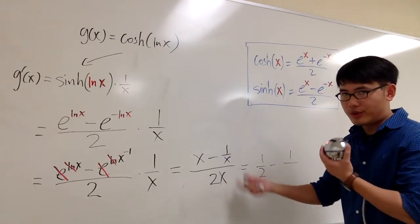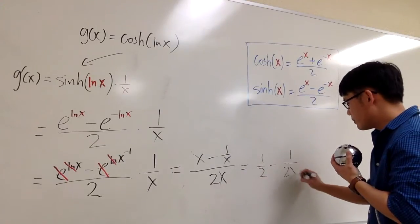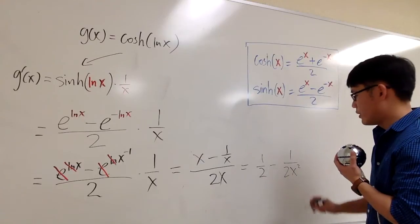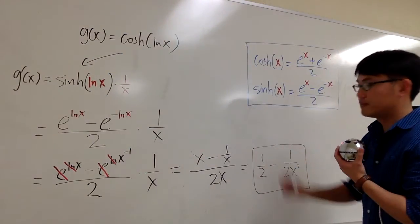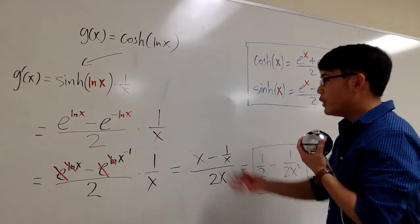And the second one is going to be subtracting 1 on the top over x, over x. So you get x squared. So we have 1 over 2x squared. And this right here will be the answer. Anyway, so that was the first way.